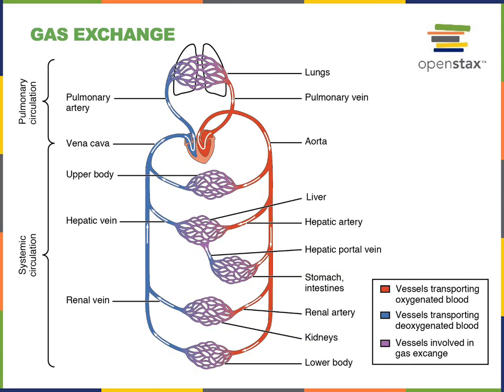This is a familiar diagram of the path of blood flow through the pulmonary and systemic circulation. The pulmonary circuit is the blood supply to and from the lungs. The pulmonary arteries carry deoxygenated blood to the lungs, and pulmonary veins drain oxygenated blood back from the lungs to the left atrium of the heart.